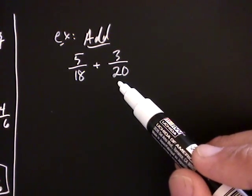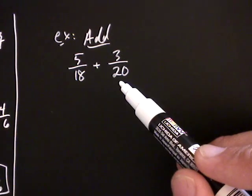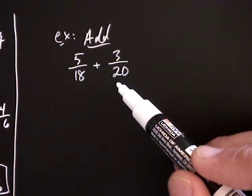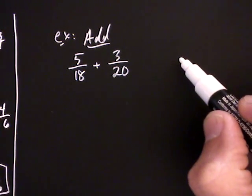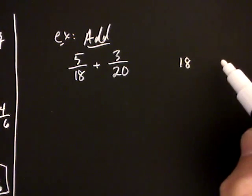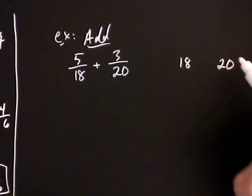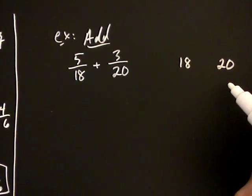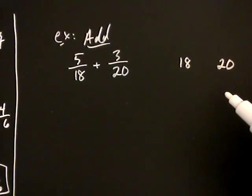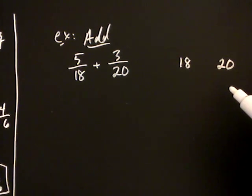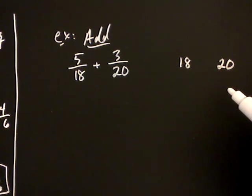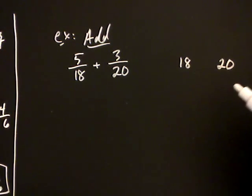The way we do that is we take the denominators and write them off to the side. Over here I'm going to write first eighteen, and then right next door I'm going to write twenty. What we want to do is find the prime factorization of each number, and the way you do that is by starting off with any factorization you can think of of each number individually.